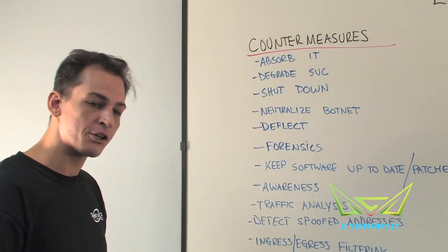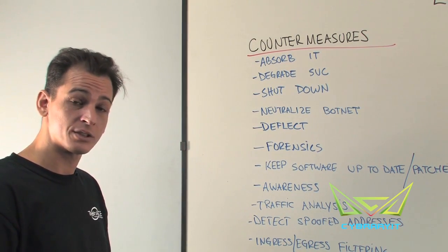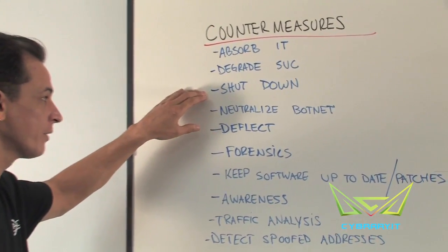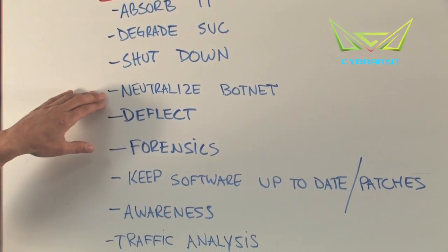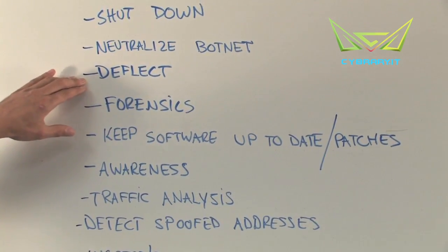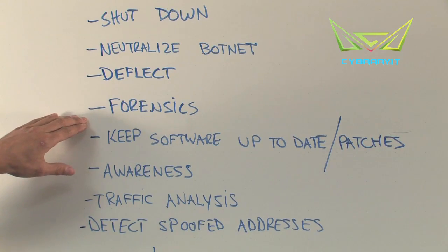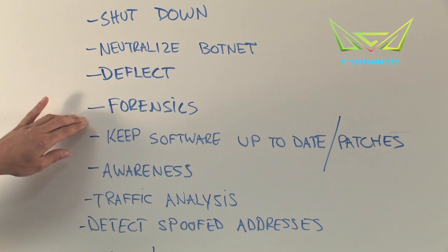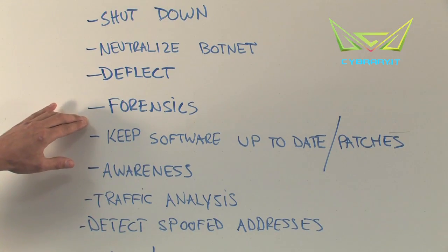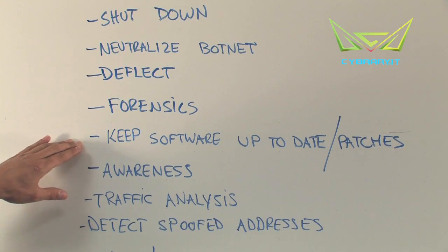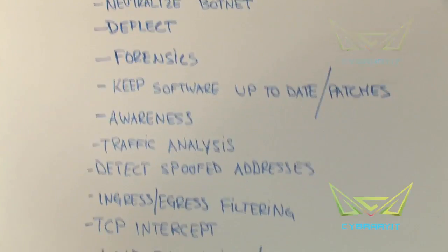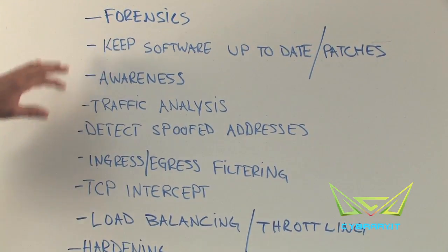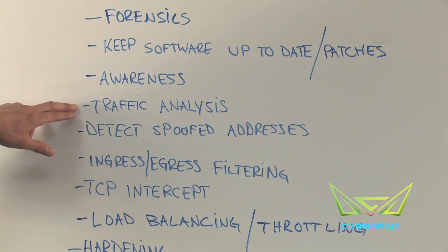Better approaches include shutting down non-critical services to keep critical ones running, actively finding and neutralizing botnets, or deflecting attacks by redirecting traffic elsewhere. If none of those work, you may end up in a forensics conversation, which suggests criminal activity and means you're already in post-mortem. Keep your software up to date with the latest patches, maintain good security awareness training, and don't allow users to install software from unknown or untrusted sources.